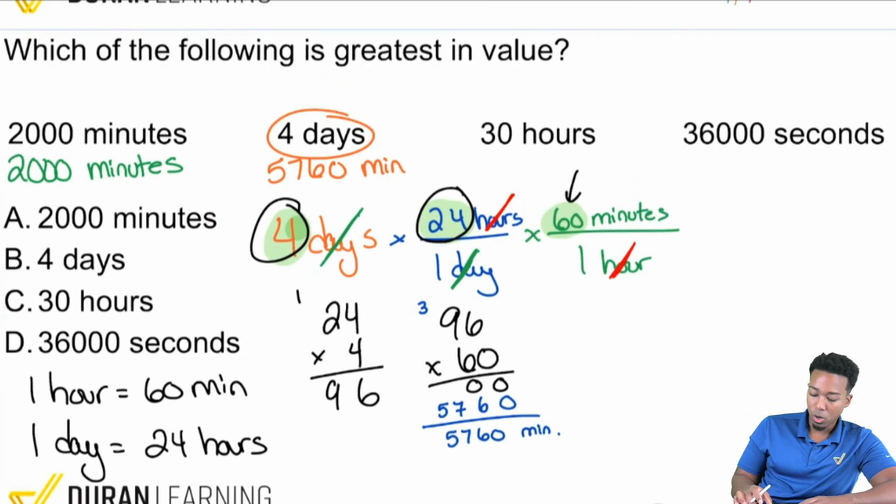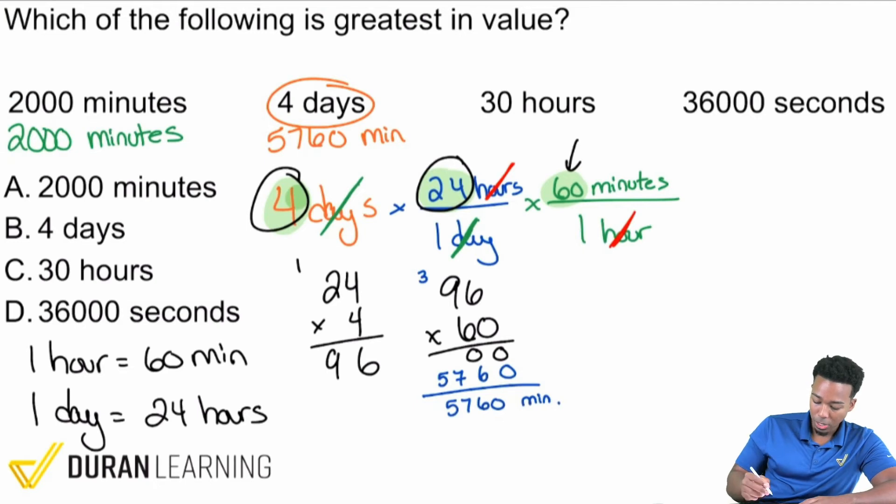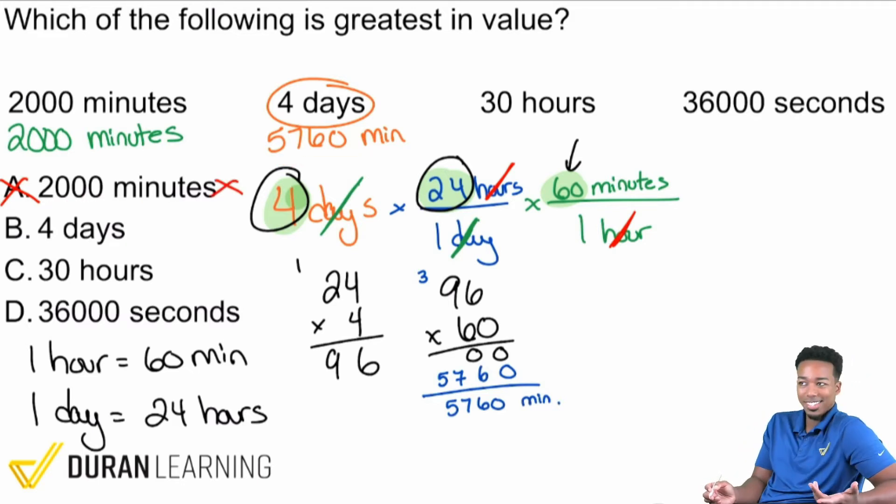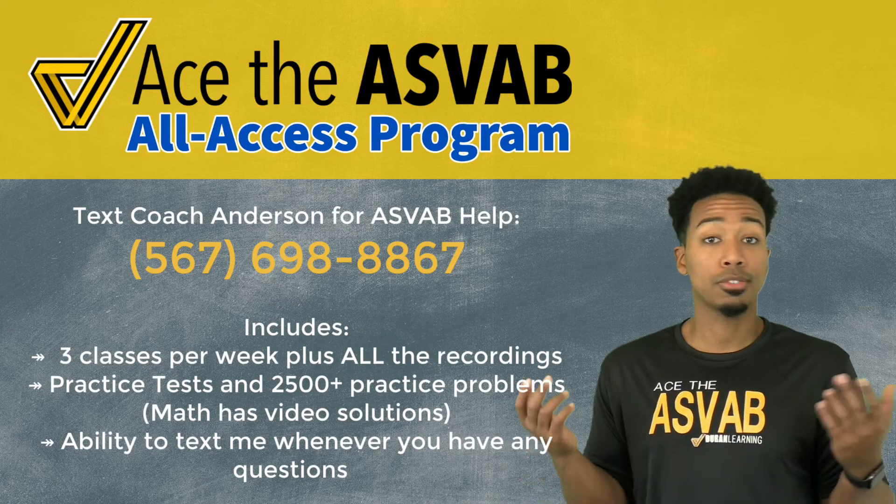With that said, I can already eliminate answer choice A because 2,000 minutes is not bigger than 5,760 minutes.